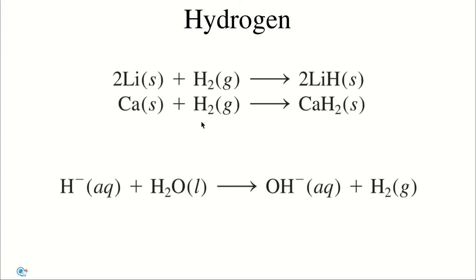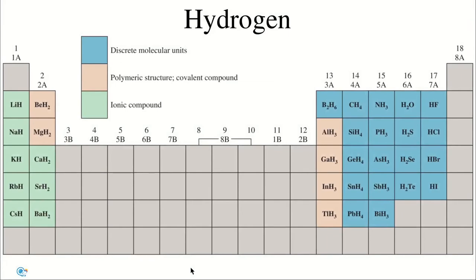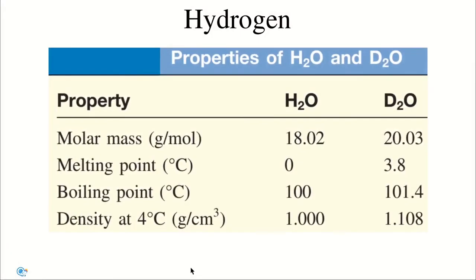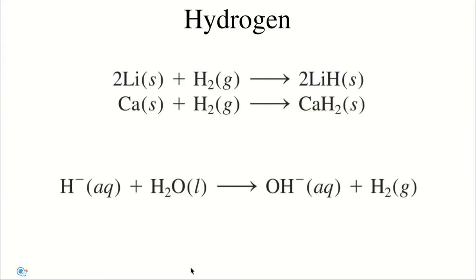Covalent hydrides: in covalent hydrides, the hydrogen atom is covalently bonded to an atom of another element. There are two types of covalent hydrides: those containing discrete molecular units such as methane and ammonia, and those having complex polymeric structures such as complexes with beryllium or aluminum.